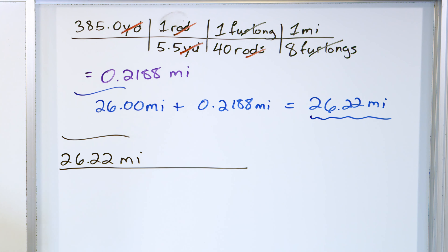So that's the distance in meters. And then finally, the very last part: 42,210 meters, and we want to convert into kilometers. We know that 1,000 meters is one kilometer — that's what a kilometer is, by definition. So meters cancel, and when you divide by a thousand the decimal moves, giving us 42.21 kilometers.